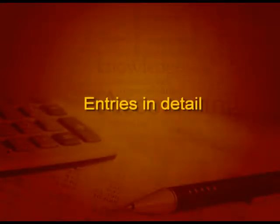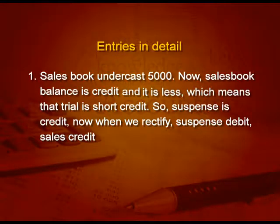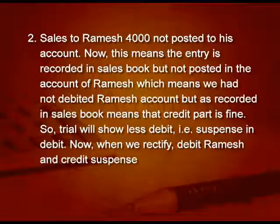Let us discuss a few entries in detail. First example: sales book undercast by 5000. The sales book balance is credit and it is less, which means the trial is short credit. So suspense account will be in credit because that is where it is short. When we rectify, we will debit the suspense account and credit sales account.